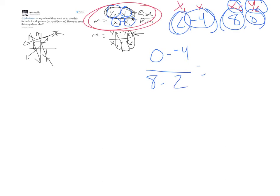What's 0 minus negative 4? When you minus a negative, that turns into a positive. That's 4. 8 minus 2 is 6.